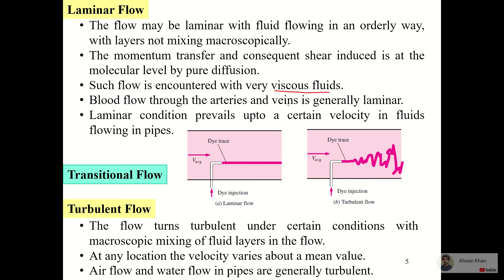Examples are arteries and veins. The blood flow in the arteries and veins is generally laminar. Laminar conditions have some limitations - they are not always laminar but are laminar up to a certain velocity. When the velocity changes, it might change to transition or turbulent flow.